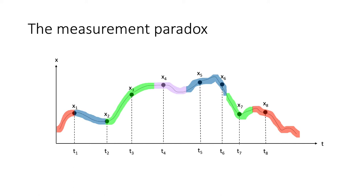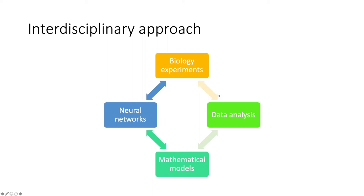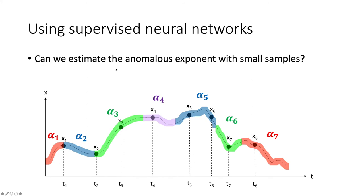Neural networks are very good at recognizing patterns and classifying them. So instead of the traditional route of data analysis, we'll use neural networks to analyse trajectories taken from biology experiments. We pose the question: can we train a supervised neural network on a mathematical model that will give us the anomalous exponent of different states with a very small number of points? The most important question when training a supervised neural network is what will be your training data and labels — in other words, which underlying mathematical model to use.